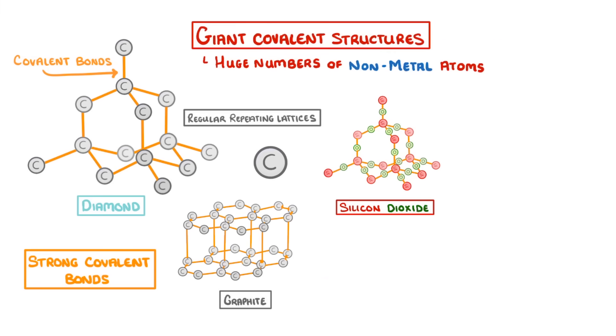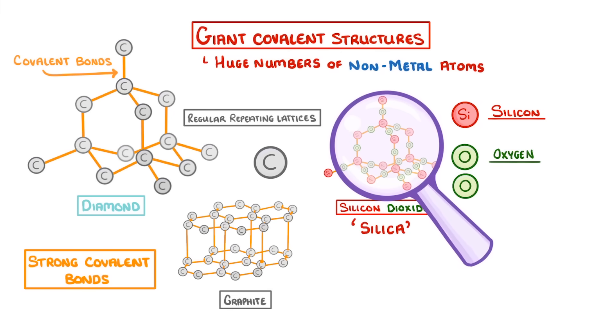Silicon dioxide, on the other hand, is made of silicon and oxygen atoms in a ratio of 1 to 2. It's also known as silica, and is the main component of sand. You won't have to draw it, but you do need to be able to recognize giant covalent structures like this.